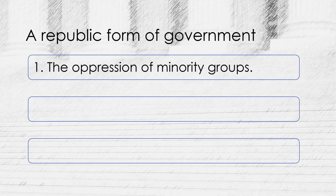To avoid this, they established a system of representative government in which elected officials would be responsible for making decisions on behalf of the people. This system was designed to ensure that the interests of all citizens were taken into account, not just those of the majority. For example, the House of Representatives is apportioned based on population, while the Senate provides equal representation for each state, regardless of its population.